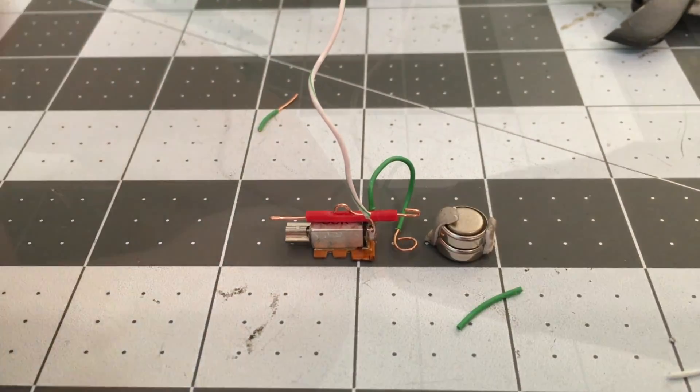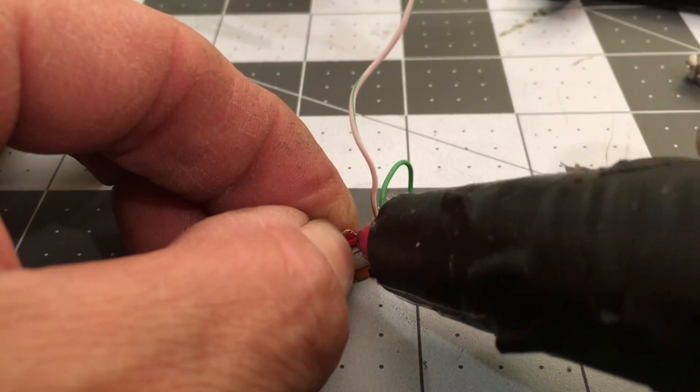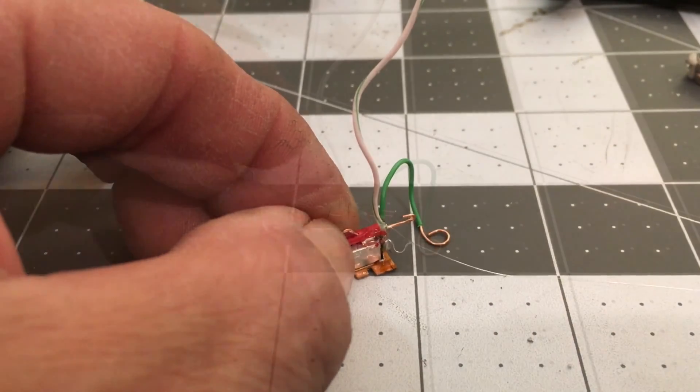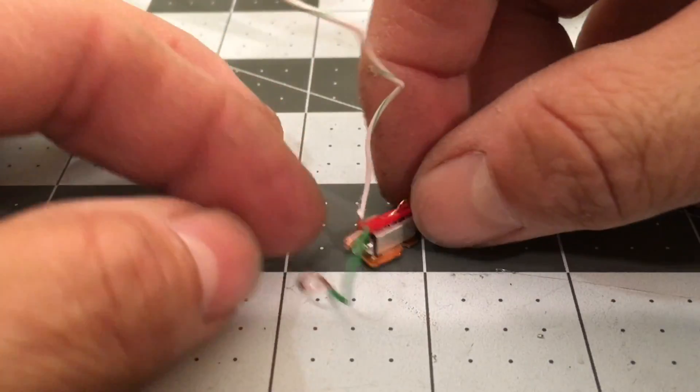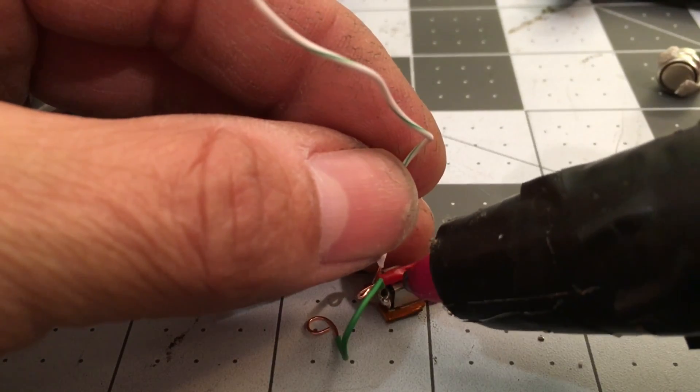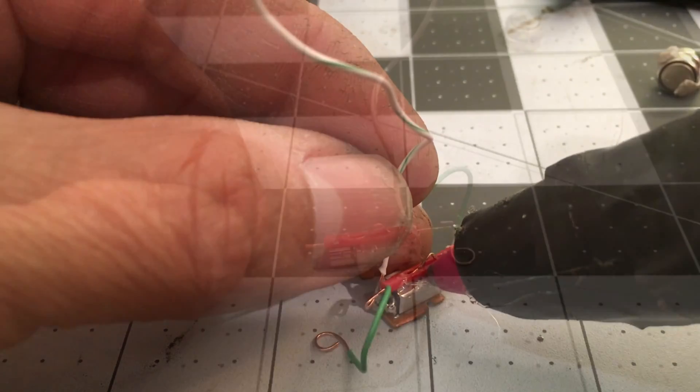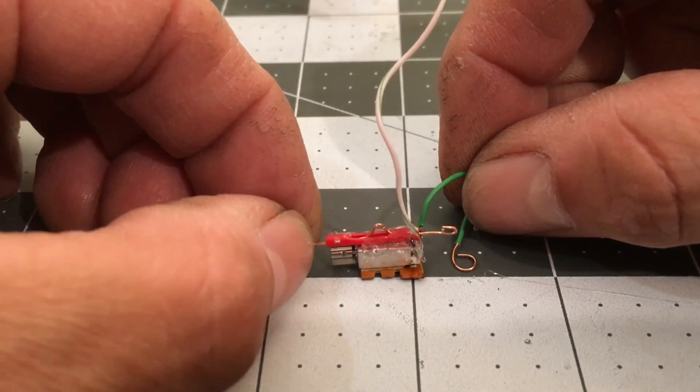This will put it in position to make good contact with the batteries. I'm using some hot glue on both sides, making sure the copper wire doesn't touch where the terminal leads are on the motor. Now that the switch is in place...